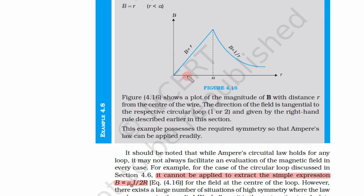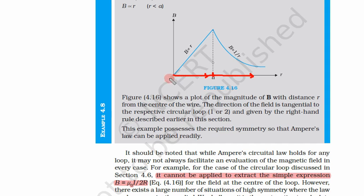Now figure 4.16 shows a plot of the magnitude of B — so this is not showing the direction, it is only showing the magnitude of B — with distance r from the center of the wire. So this is the center, this is the radius, and this is outside, and this before the radius is inside. This is the center.